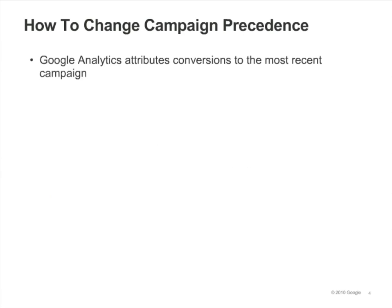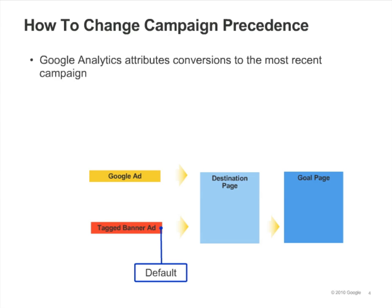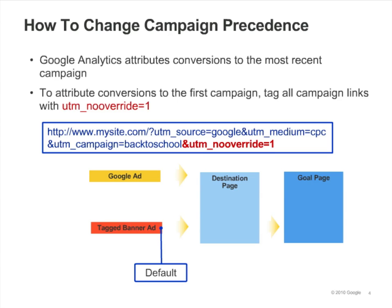Google Analytics attributes conversions to the campaign that most recently referred the visitor. For example, let's say that someone discovers your site by clicking on one of your AdWords ads. Then they come back to your site by clicking a banner ad tagged with campaign variables, and this time they convert to one of your goals. By default, the banner ad will get the credit for the conversion, not the AdWords ad that originally referred them.